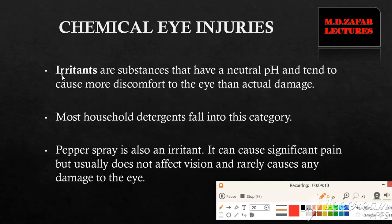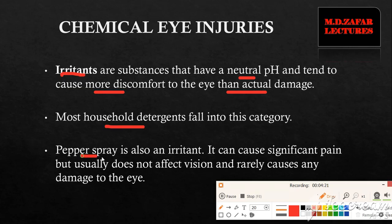Irritants are substances which have a neutral pH and they tend to cause more discomfort to the eye than actual damage. They include household detergents and pepper spray. Pepper spray causes significant pain but rarely causes actual damage to the eye.